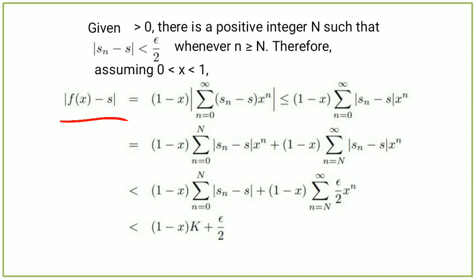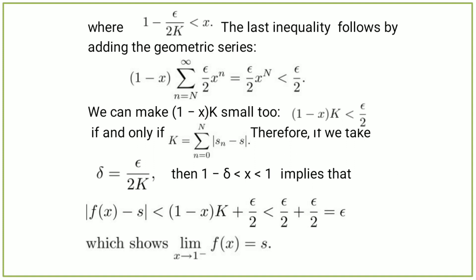This implies less than (1 minus x) times K plus epsilon over 2, where K is a constant and 1 minus delta less than x less than 1. The inequality follows by summing the geometric series: (1 minus x) times the summation from n equals N to infinity of (epsilon over 2) times xⁿ equals epsilon over 2 times xᴺ, which is less than epsilon over 2.